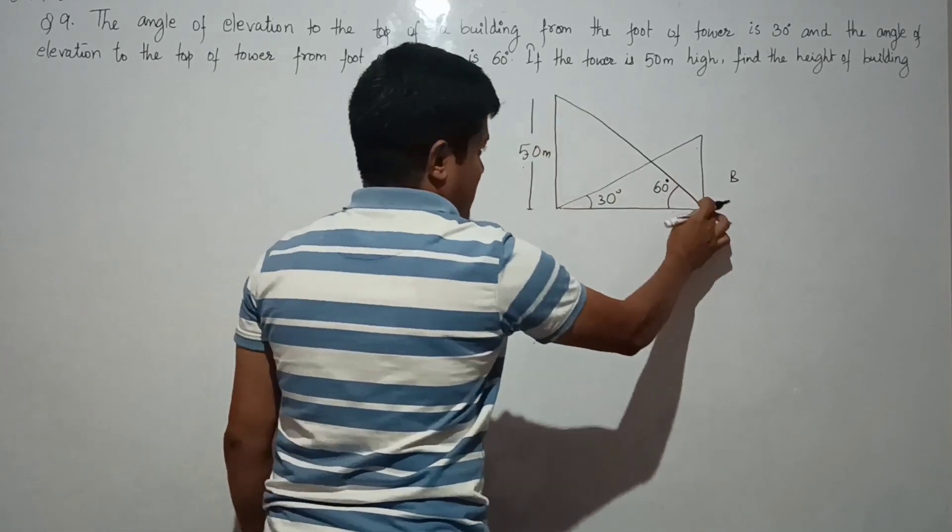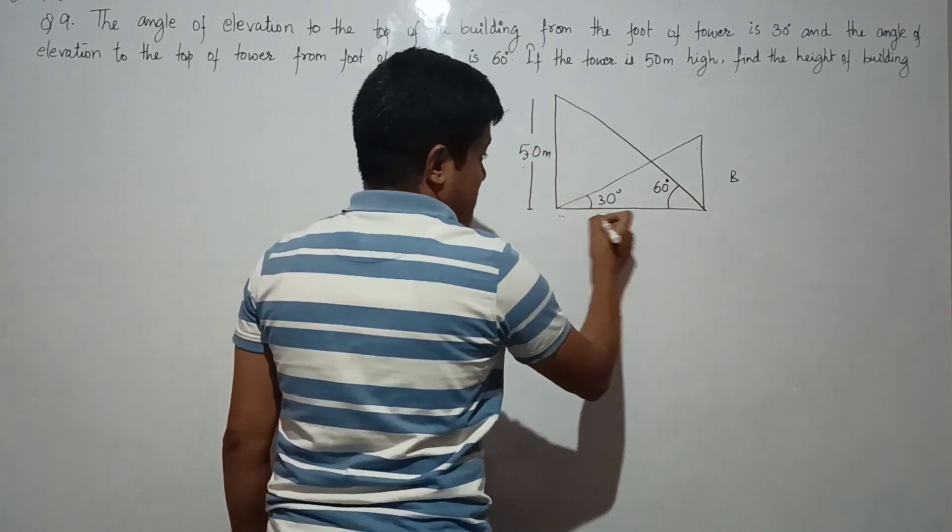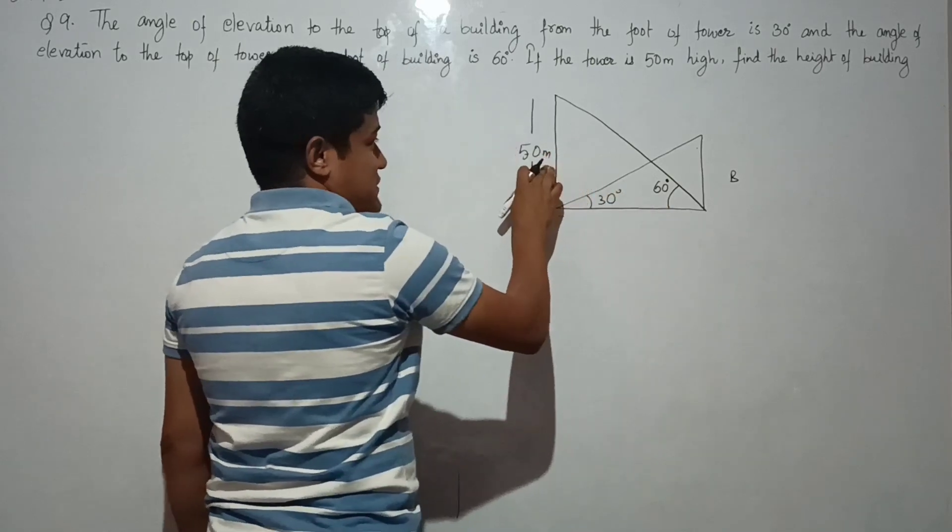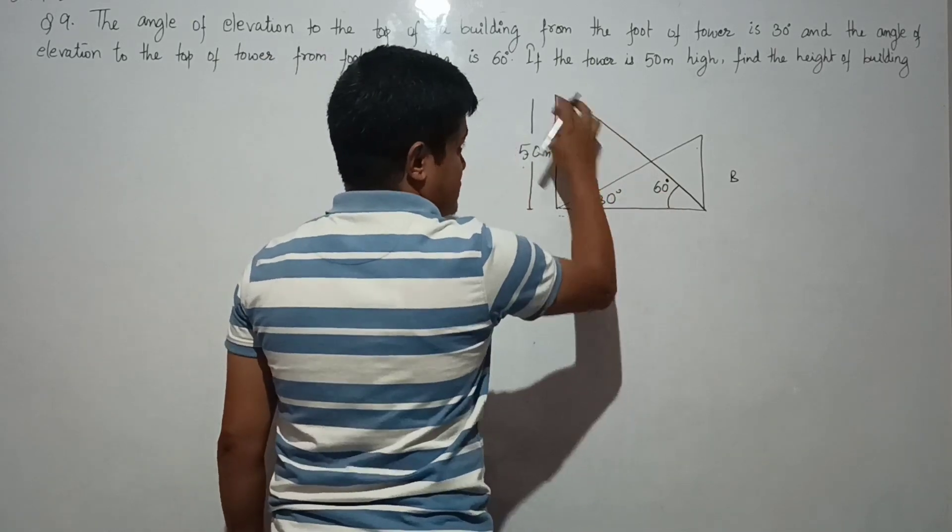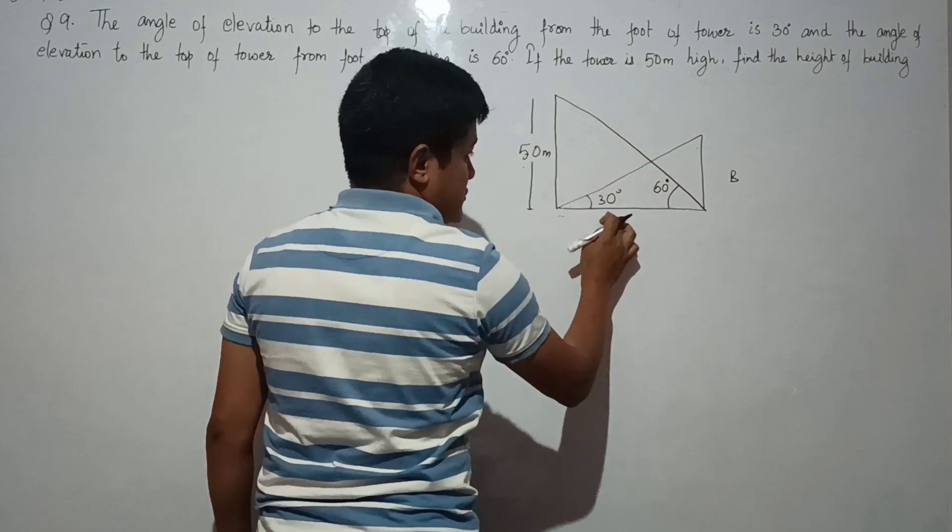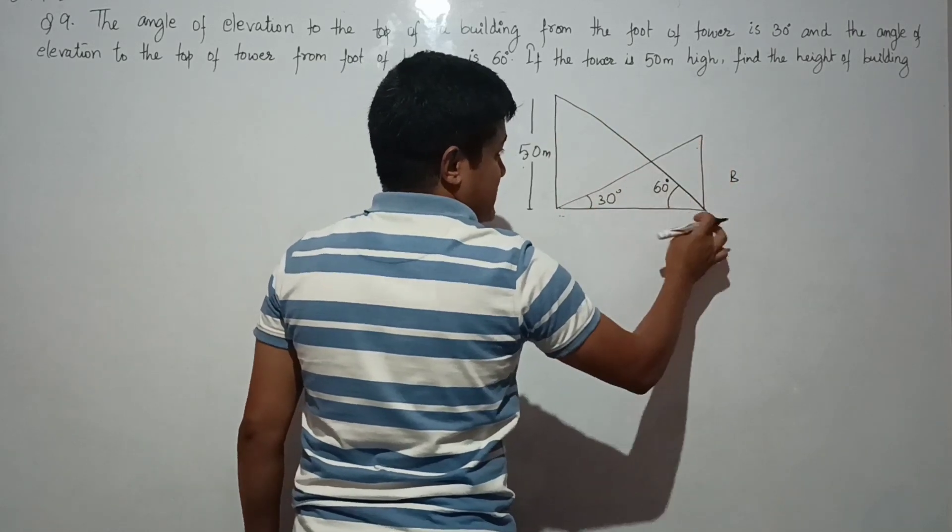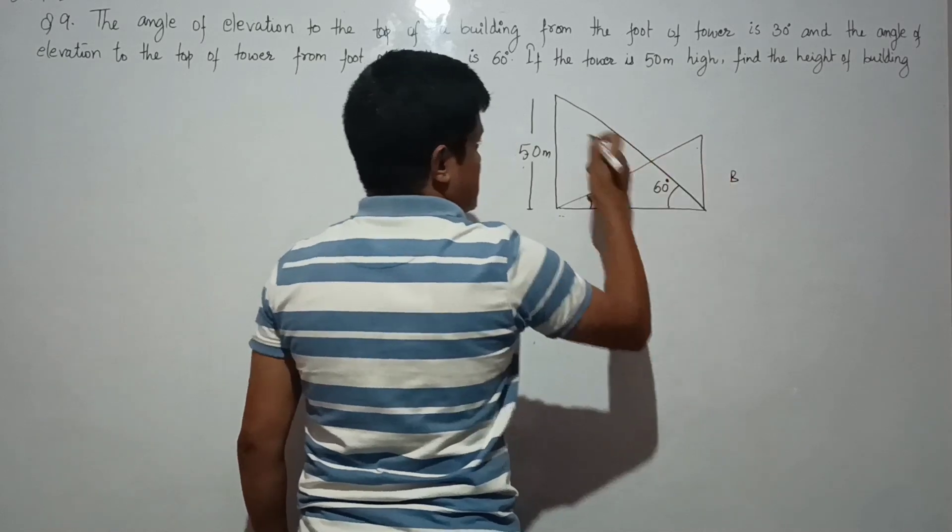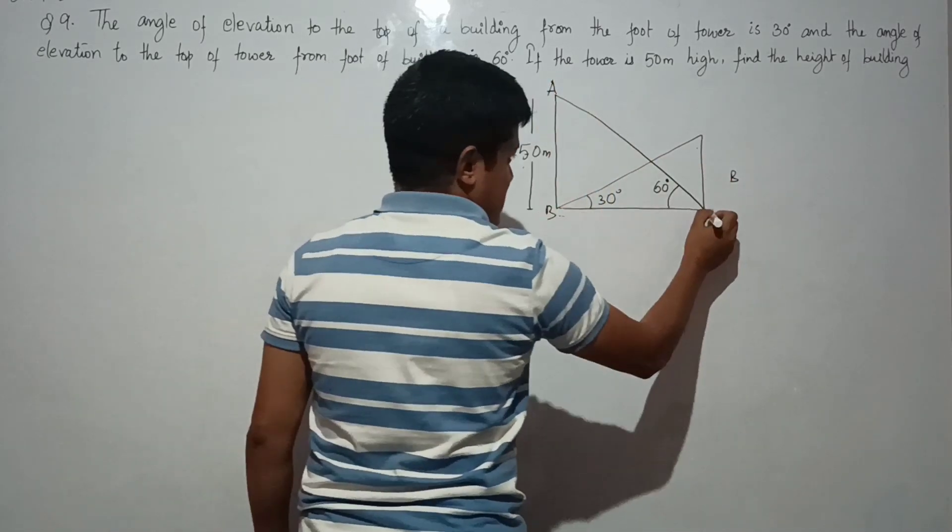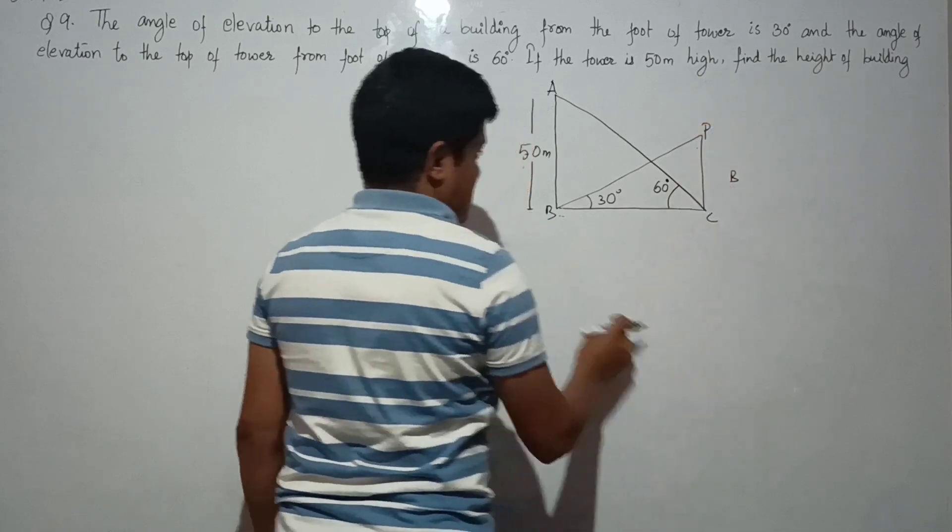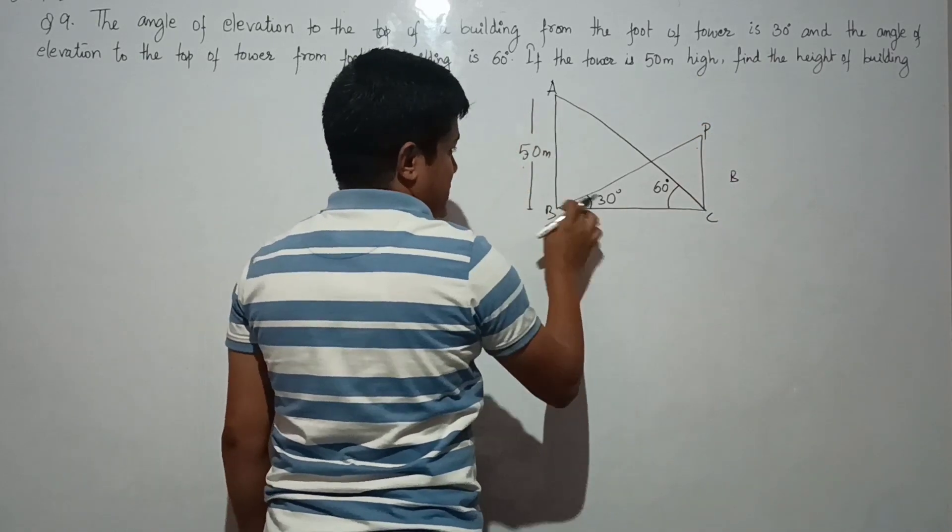So in these triangles with the common base, the angles are given. This triangle has 30 degrees, this triangle has 60 degrees. So let us name the corners. Let us write ABC, and let us write this P.